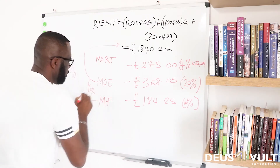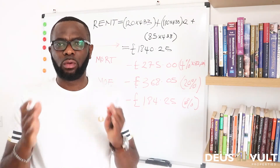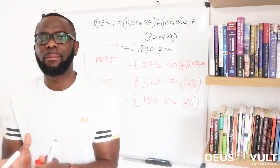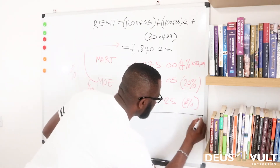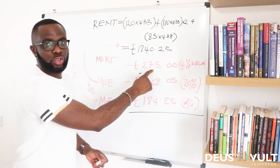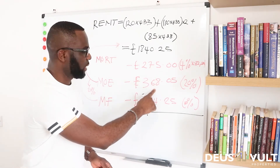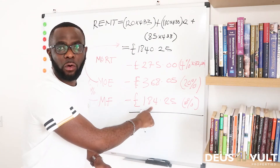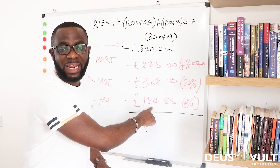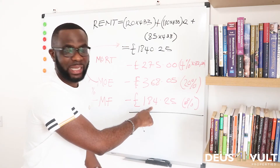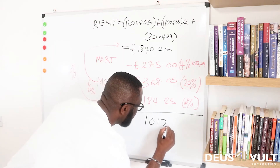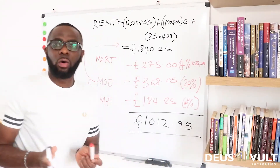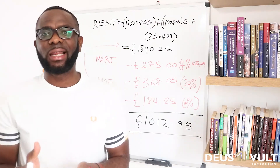Now we have everything we need to work out our cash flow. From our rent we take our mortgage, our monthly expenses, and our management fee. So: £1,840.25 minus £275 (mortgage), minus £368.05 (monthly expenses), minus £184.25 (management fee) — that gives us a cash flow of £1,012.95 per month. And that's how we work out the cash flow.